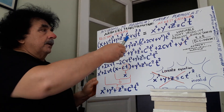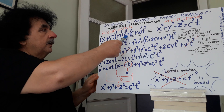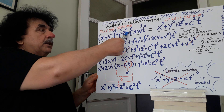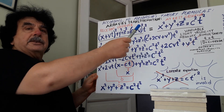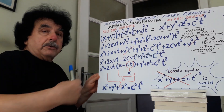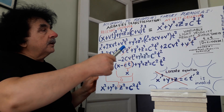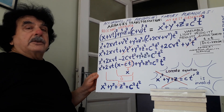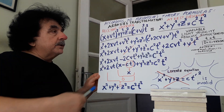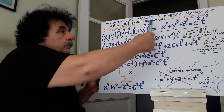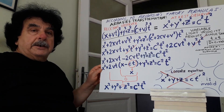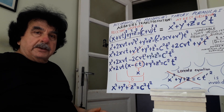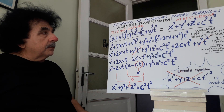Yes, here on the left, the equation belongs to the Observer Receding from the Light Source. On the other side is the Observer at Rest equation. I will show you these two equations are mathematically the same.